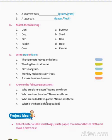Who are called flesh eaters? Animals that eat the flesh of other animals are called flesh eaters, like tiger, lion, wolf, etc. — these are flesh eater animals. What is the home of a dog called? The home of a dog is called a kennel.